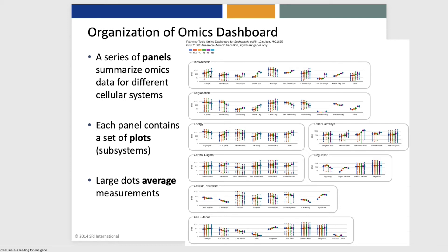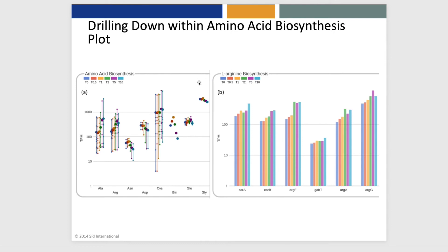Now, if we want to see more detail about one of those subsystems, we simply click on that plot, and we now get the same style of display for each of the individual amino acid biosynthetic pathways. And if we click on it, we see details of each gene involved in the pathway at each of the different time points.